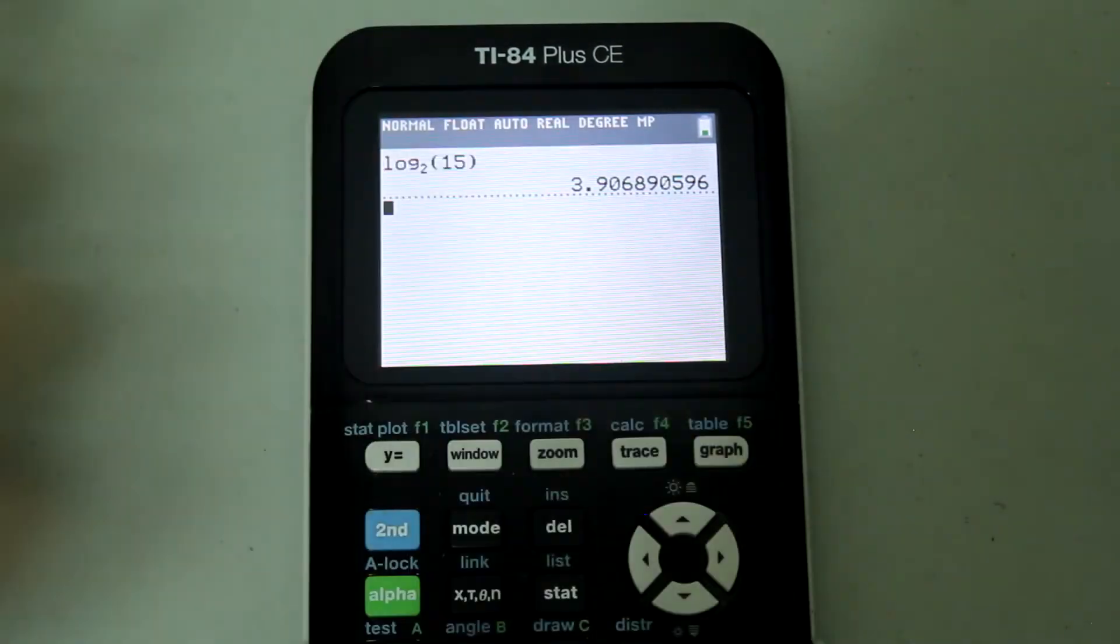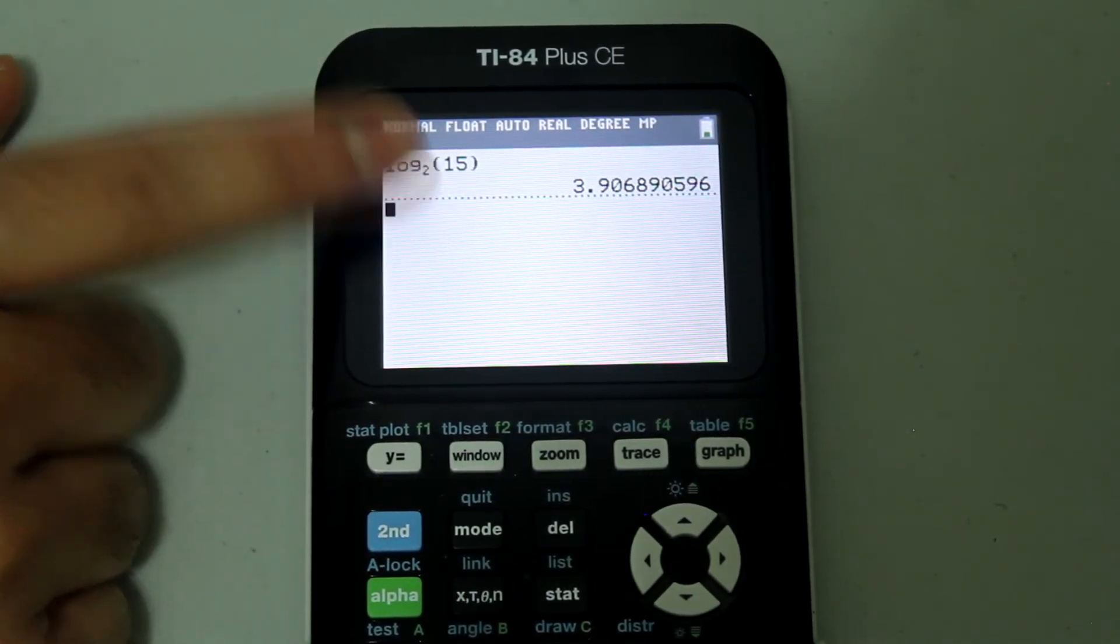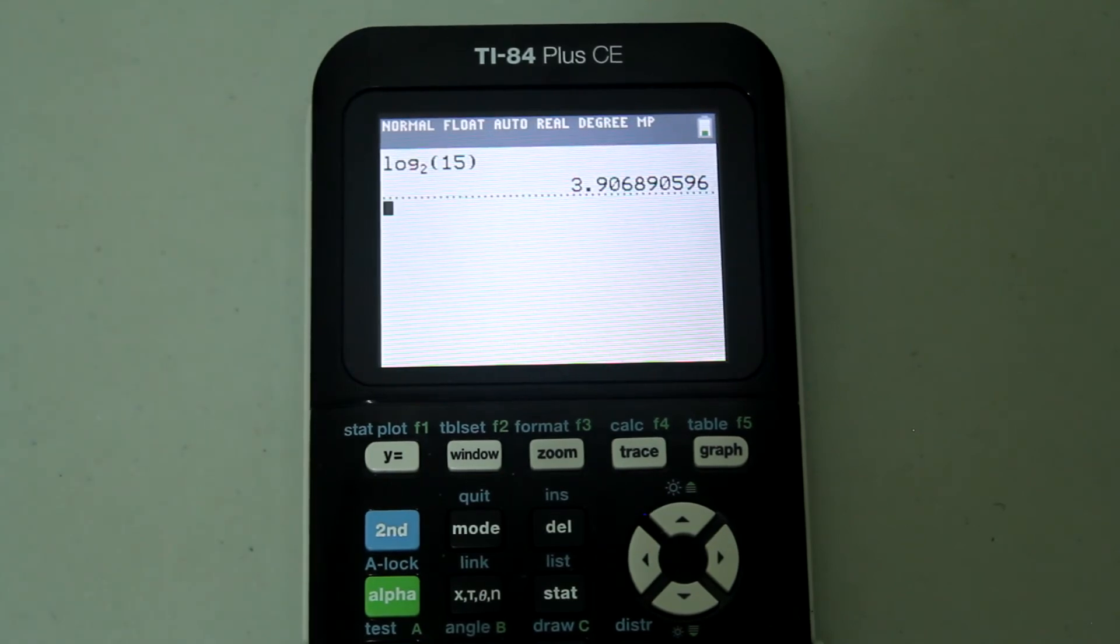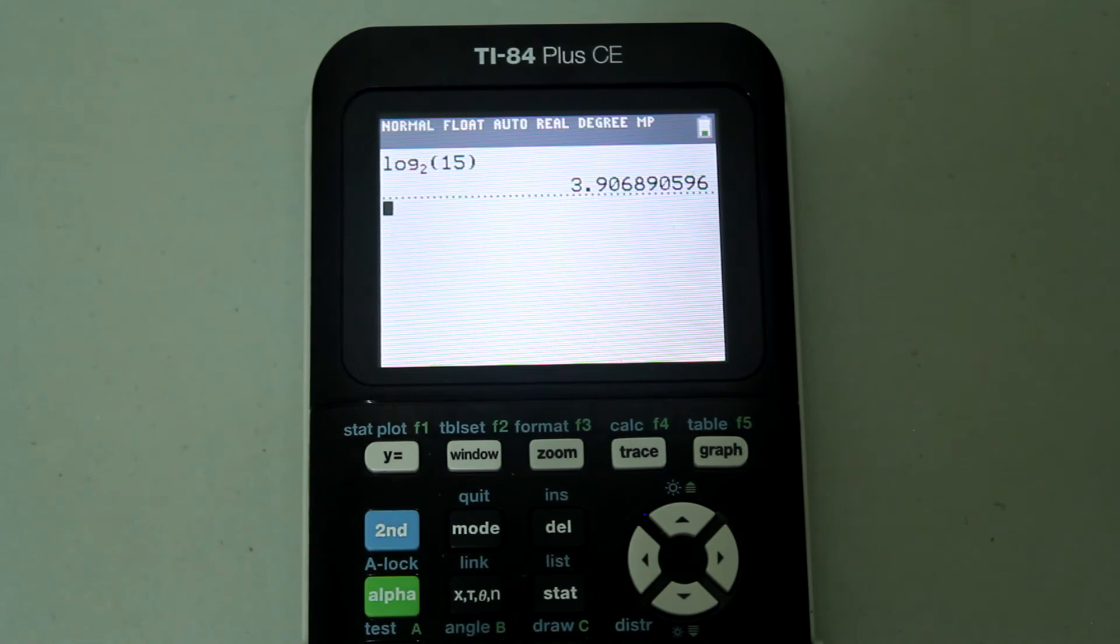And this is what you get, approximately 3.9. So that's how you do the log with any base on the TI-84 plus CE.